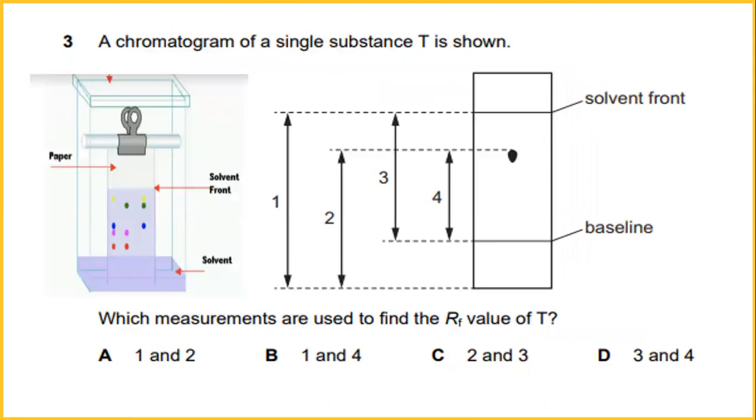Number three, a chromatogram of a single substance T is shown. Which measurements are used to find the Rf value of T? From this paper chromatogram, this can be used to distinguish between pure and impure substances. The measurement used to find the value of T is started from solvent front until the baseline. In this case it could be 3 and 4. The answer for number three is D.